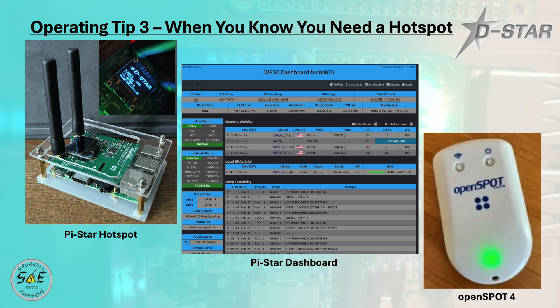Hotspots are controlled using a PiStar dashboard where you can see recent connections and change reflectors — either from your radio or via the software. If you're mobile, you might look into something like an OpenSpot, such as the OpenSpot 4 pictured here. It has an internal battery, allows you to carry it in your pocket, and links up great with your home Wi-Fi or even your cellular Wi-Fi hotspot to get onto the DSTAR network — nice to travel with.